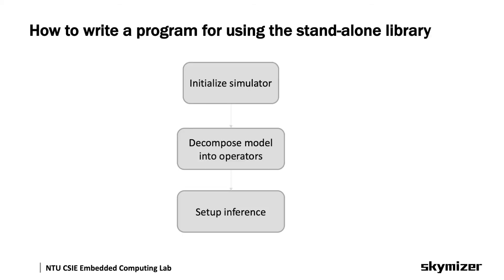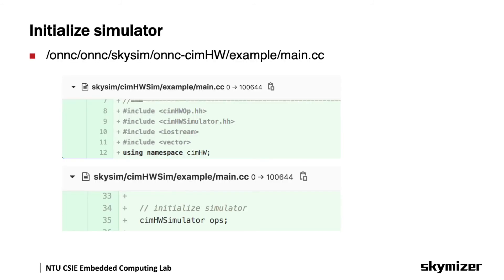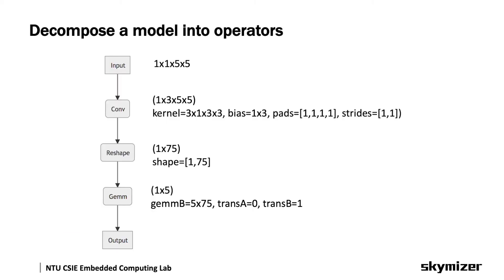Let's talk about how to write a program using the standalone library. There are three steps: initialize the simulator, decompose the model into operators, and set up inference. There is a main file in the example folder you can open to follow this instruction. You need to add the required header files in your code. We can initialize the simulator instance after the namespace declaration — the instance is named ops in this example. Then you need to decompose a model into operators; here is our example with three operators: convolution, reshape, and gemm.